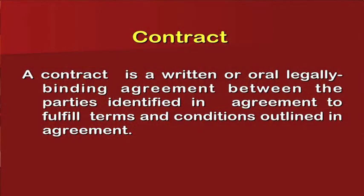What is a contract? A contract is a written or oral legal binding agreement between the parties identified in the agreement to fulfill terms and conditions outlined in an agreement. So contract is basically an agreement between two parties, party A and party B or there could be multiple parties. People who are outlined with the name and address are liable to fulfill the terms and conditions of the contract for a definite period of time.